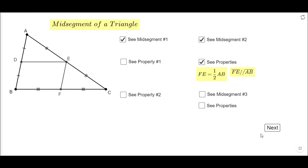If you notice, FE is half of AB and FE is parallel to AB. And we have a third midsegment, the last one in this triangle, which is DF, which has the same properties. DF is half of AC and DF is also parallel to AC.